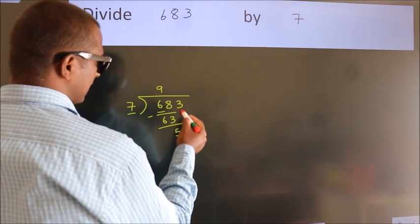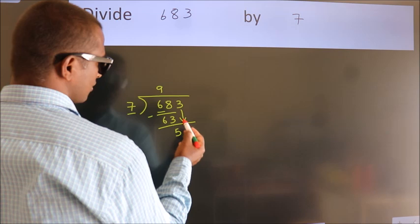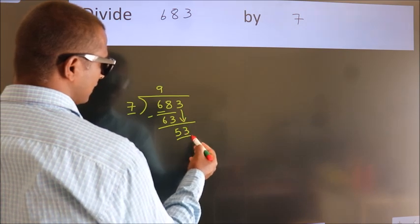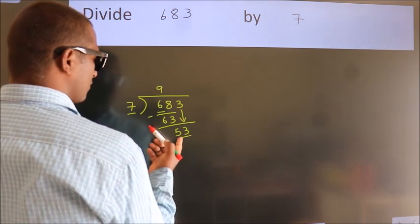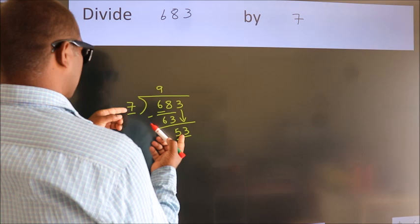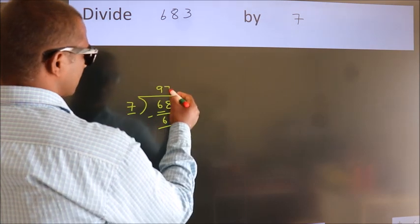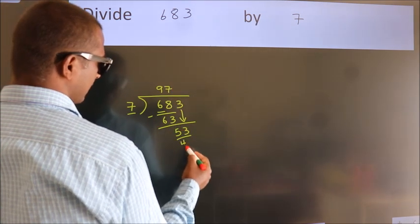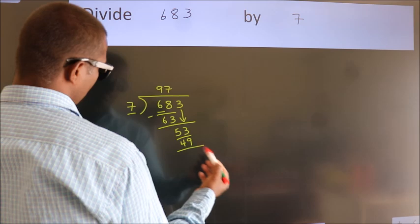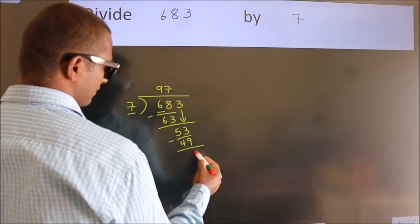After this, bring down the beside number. So 3 down. So 53. A number close to 53 in the 7 table is 7 sevens, 49. Now we subtract, we get 4.